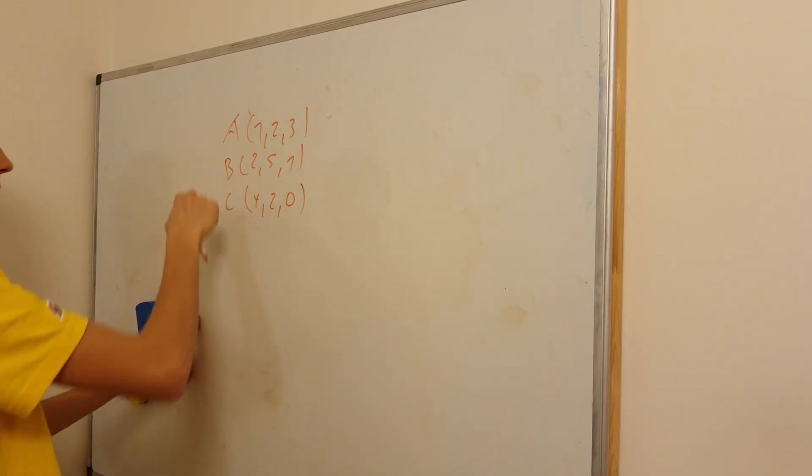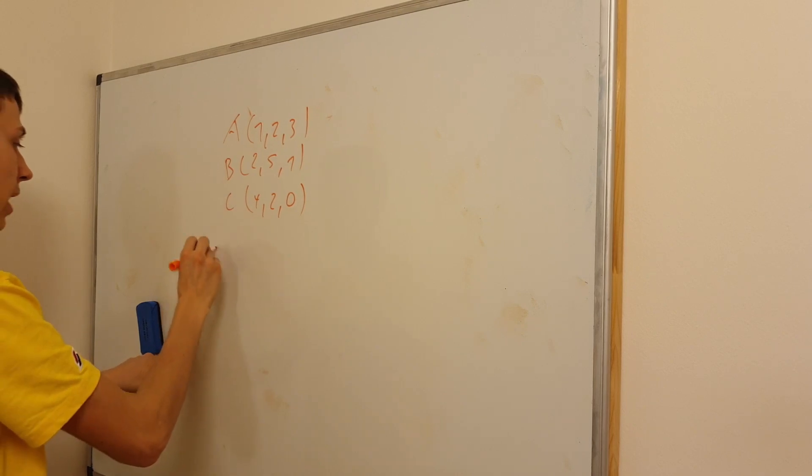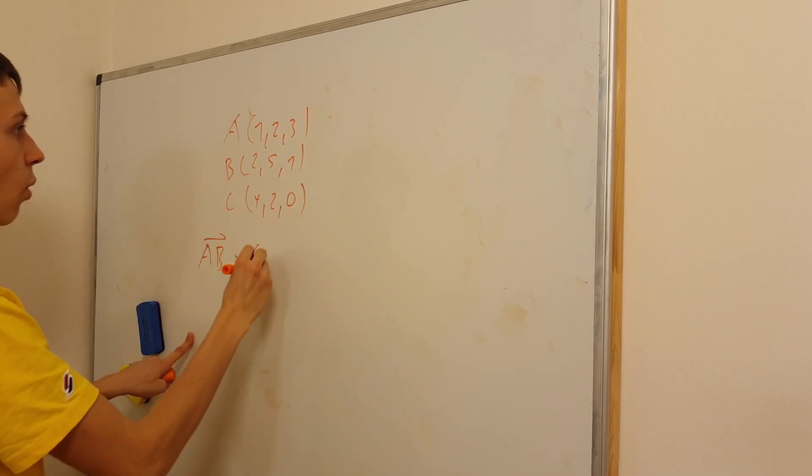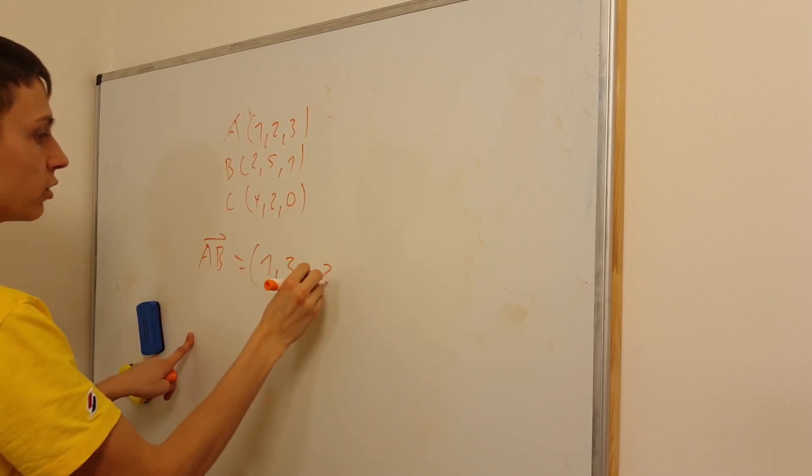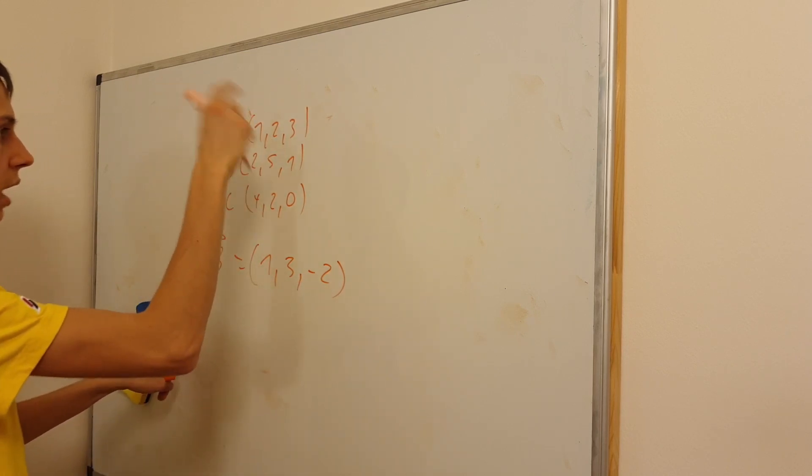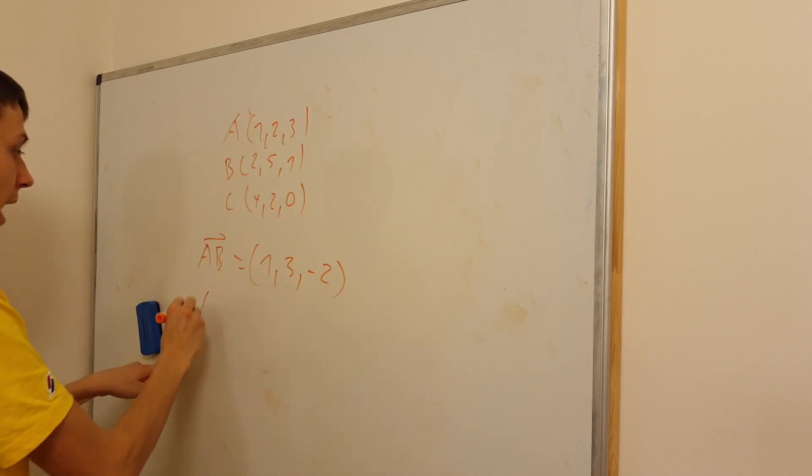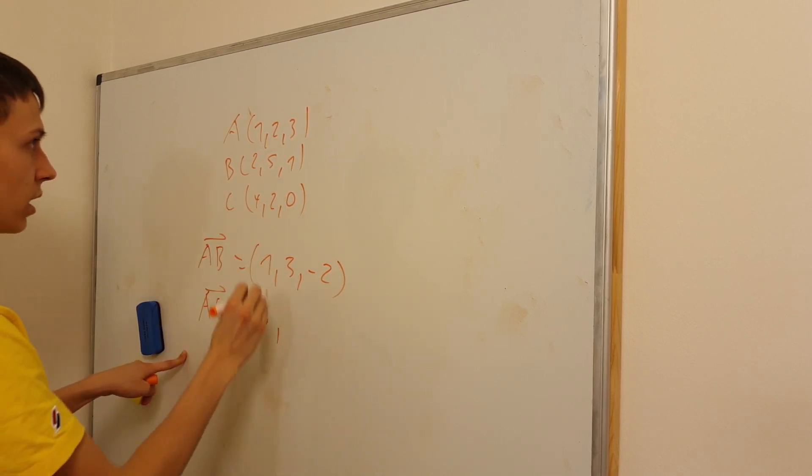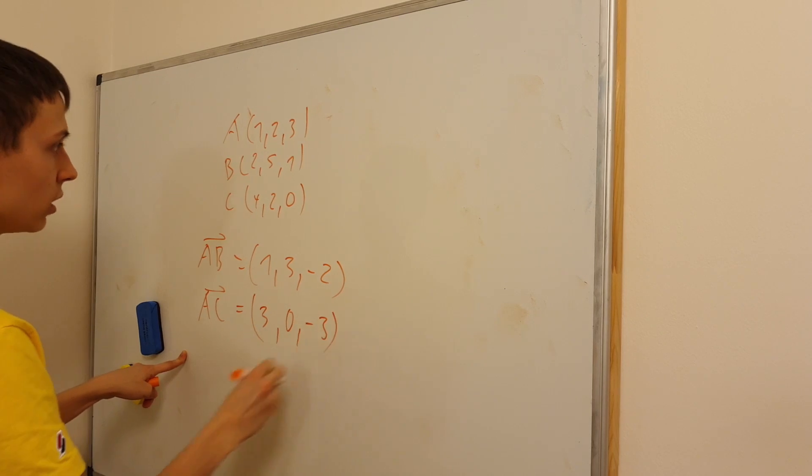We can get the vector from A to B and vector A to C. So AB as a vector will be 1, 3, and minus 2. And AC, the second vector that we need for definition of a plane, is 3, 0, minus 3.